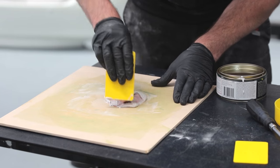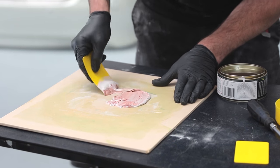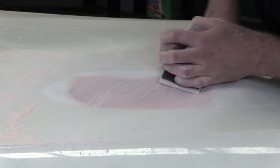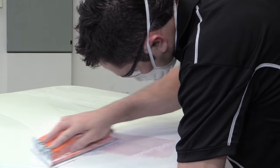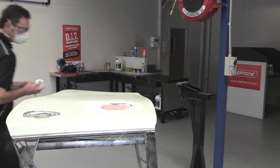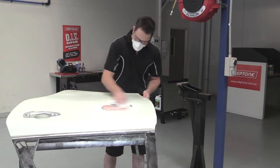If necessary you can reapply car filler if further filling is required or if you notice pinholes. Allow to dry and re-sand area again with 180 to 240 grit paper. You've now repaired the dent and you're ready for the paint repair stage.